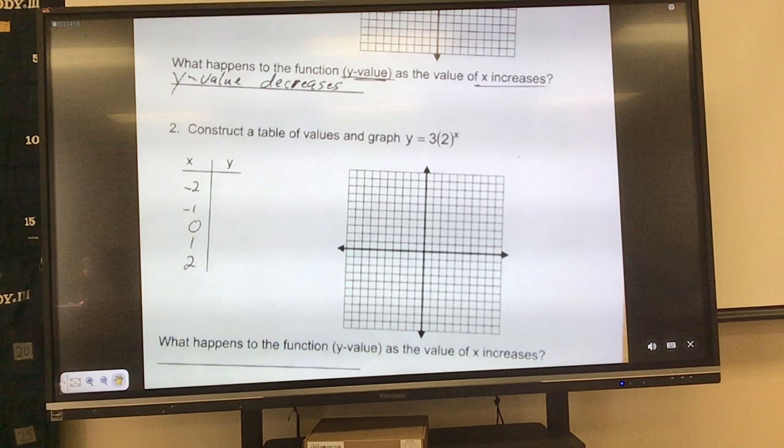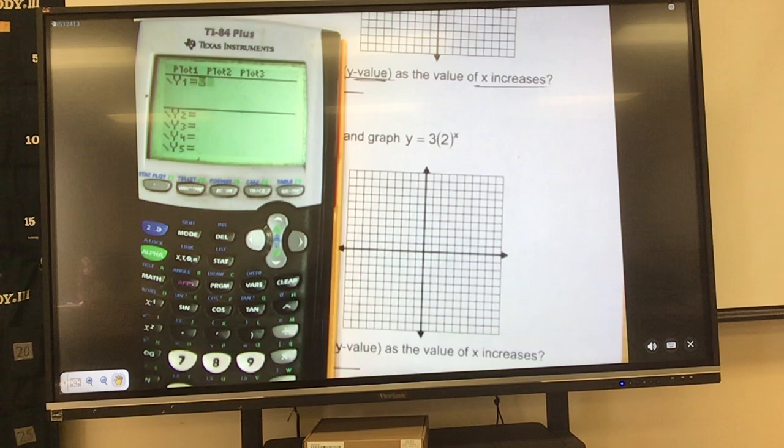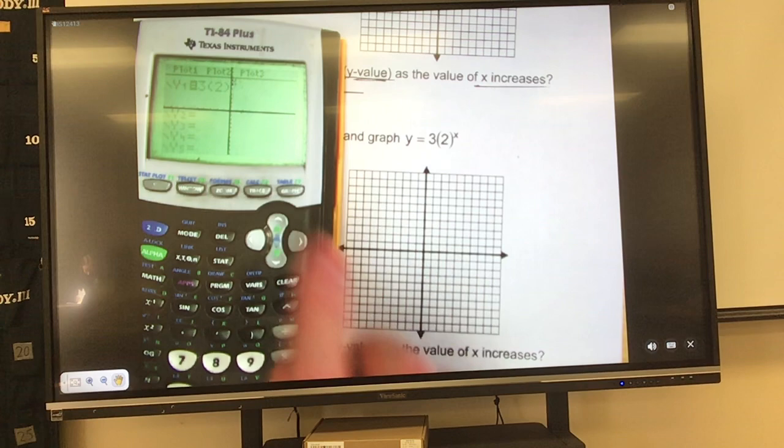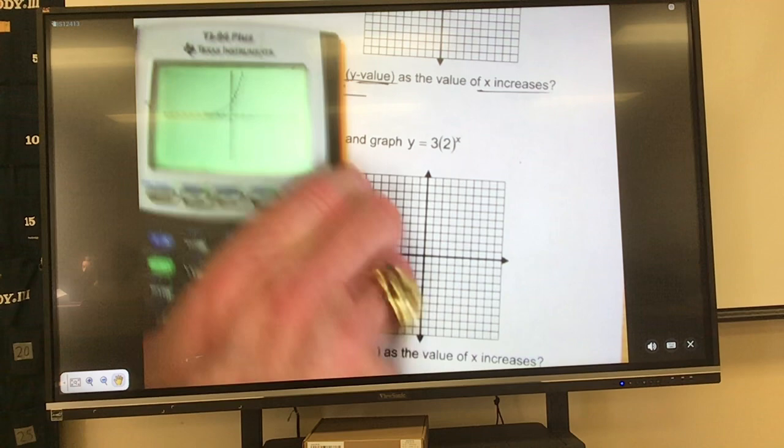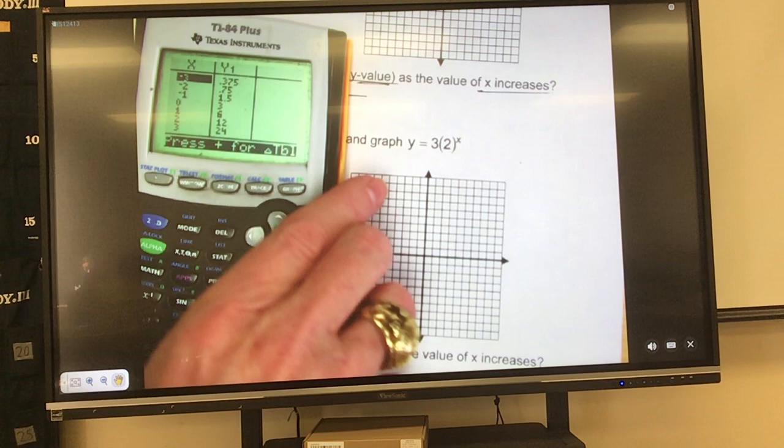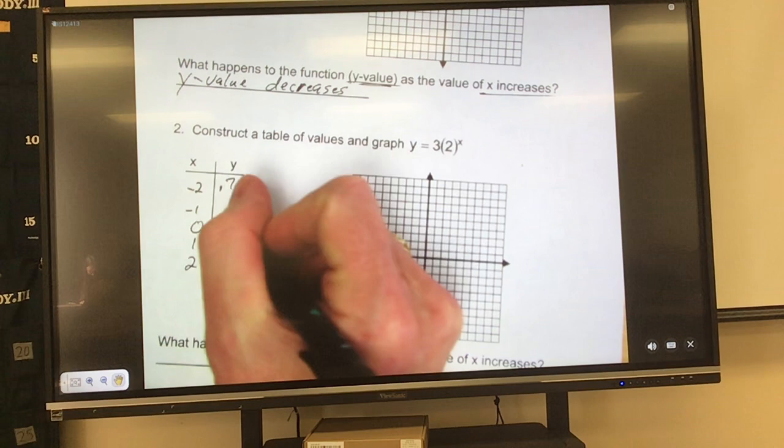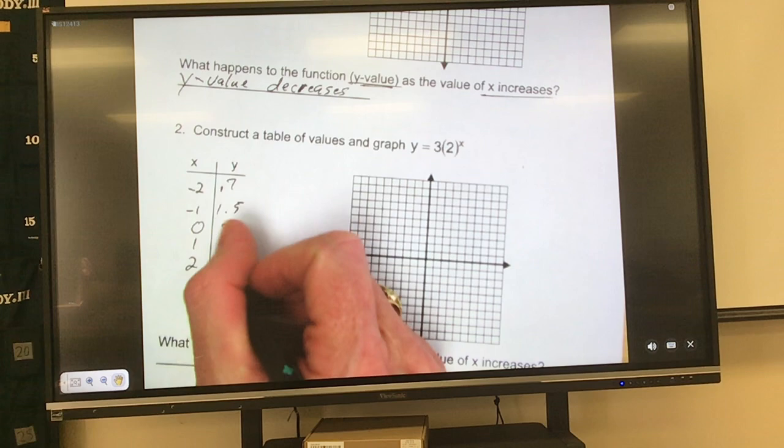Three. Parentheses. Two. Close them. Raise to the x-power. Hit graph. What do you notice about this graph? Goes up from left to right. So let's go to our table. Second graph. And we're going to fill in our table. Negative 2 is 0.75. Negative 1 is 1.5. 0 is 3. 1 is 6. And 2 is 12.